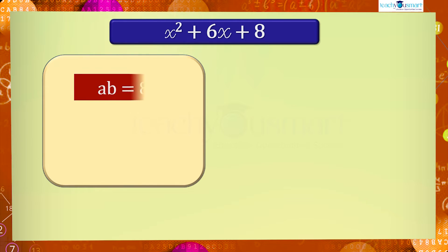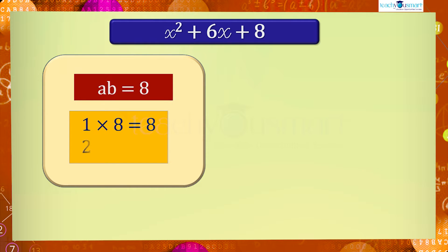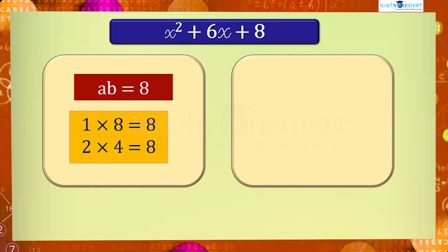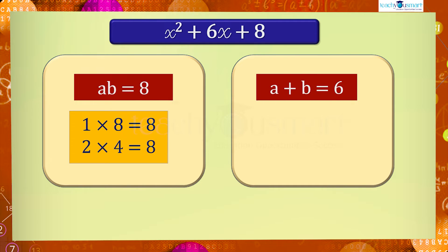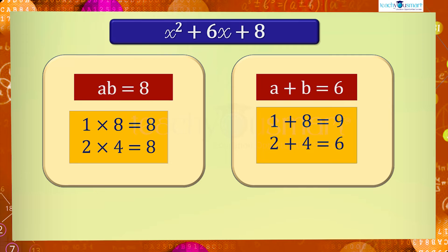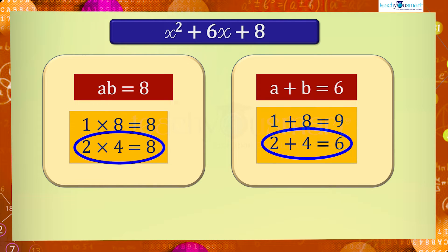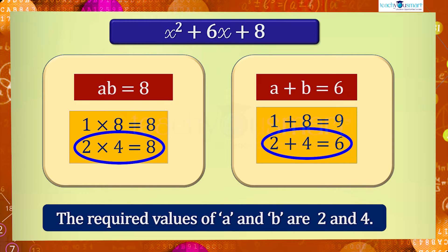Since ab = 8, the possibilities are: 1 × 8 = 8 and 2 × 4 = 8. The other condition is a + b = 6. Using the possible values: 1 + 8 = 9, and 2 + 4 = 6. From this it is clear that the required values of a and b are 2 and 4.